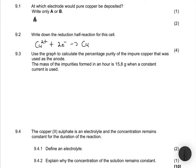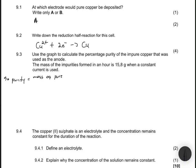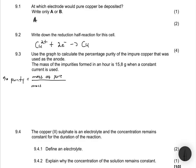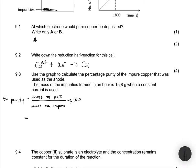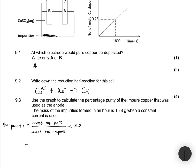Question 9.3 asks us to use the graph to calculate the percentage purity of the impure copper used as the anode. The mass of impurities formed in an hour is 15.8 g when a constant current is used. The percentage purity formula is: mass of pure sample divided by mass of impure sample, multiplied by 100. The mass of the pure sample is the mass deposited at the cathode.